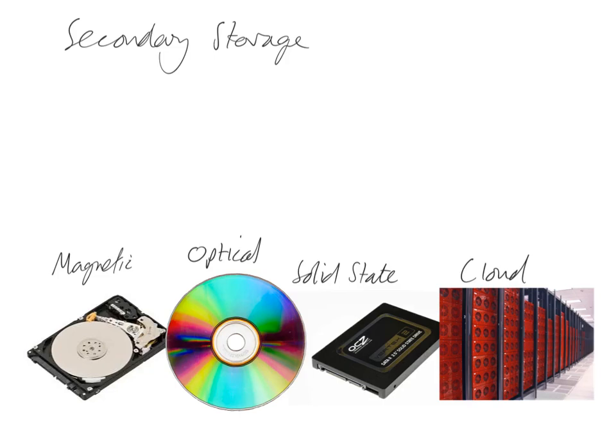There are four types of secondary storage you'll need to know about. Secondary storage essentially allows you to store and save things from your computer, because computers wouldn't be much good if every time you turned them off they erased all of the data — which is what happens with RAM. So you need secondary storage in order to save your data.